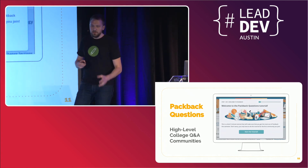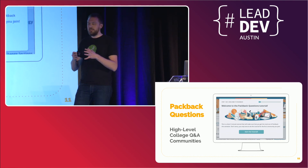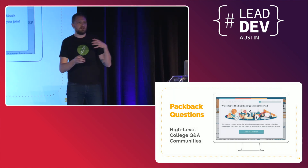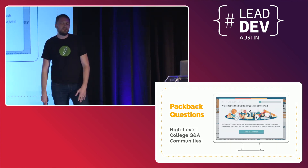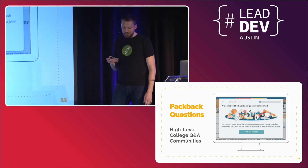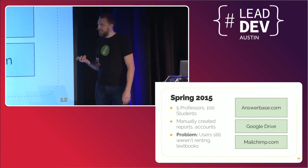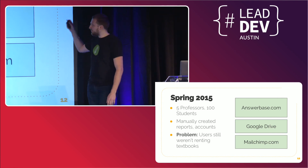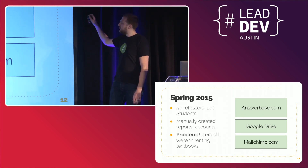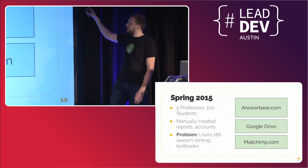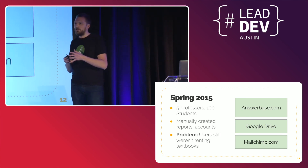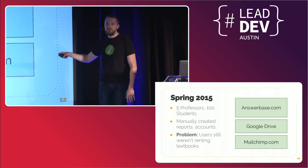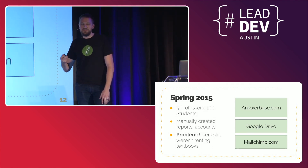What startups often do with a chicken-and-egg or two-sided marketplace problem is build a side project or marketing project to bring users in. The idea was: if we build a question-and-answer platform that college students can use in their class — with professors overseeing it — we'd catch them at just the right moment and sell them textbooks. We put together a product using AnswerBase as the back end, Google Drive and Sheets for professor reports, and MailChimp to market to students weekly.